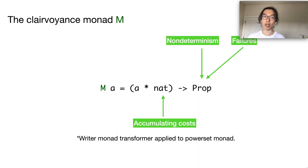And the clairvoyant monad is the minimal implementation that implements all these three features. In fact, it is the writer monad transformer applied to the power set monad. And we can further inline this definition to obtain the definition as follows.